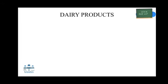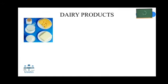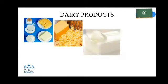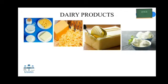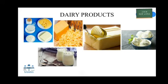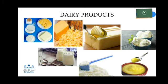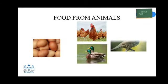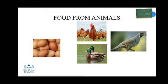We also get dairy products like milk, cheese, butter, ice cream, yogurt, milk powder, and ghee. We obtain eggs from chicken, duck, quail, etc.